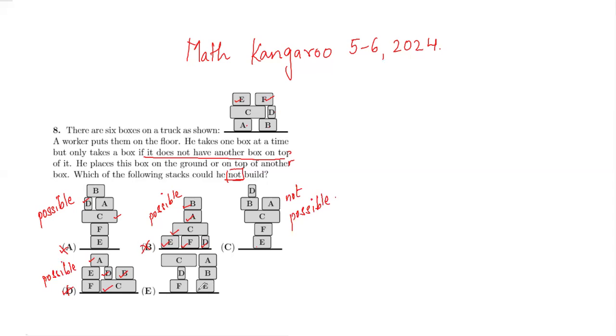Let's check option E. You have E, F, then you put D, then B becomes free, then you take C and A becomes free. So this is also possible, hence not my answer. The only thing which is not possible to build is option C. So in this case, my answer will be C.